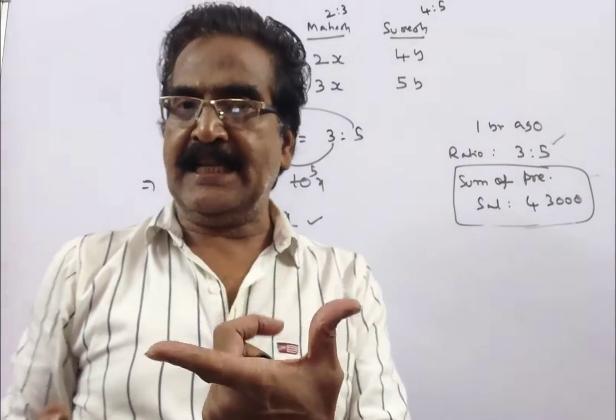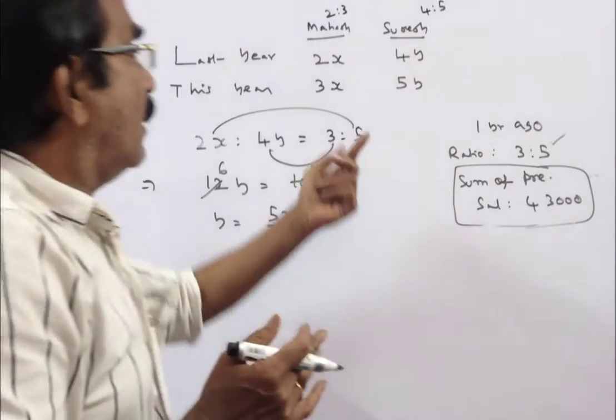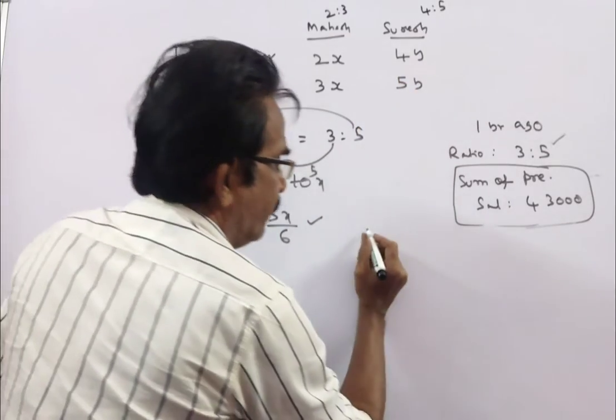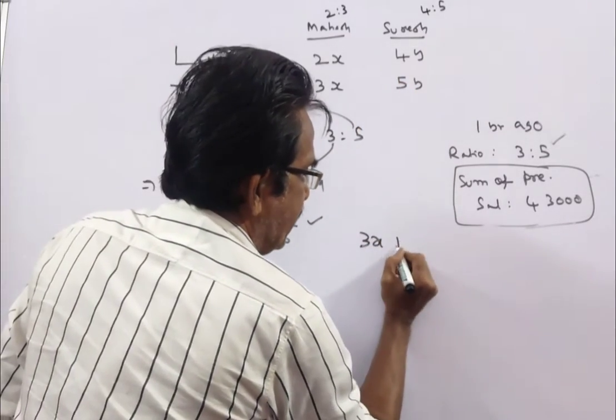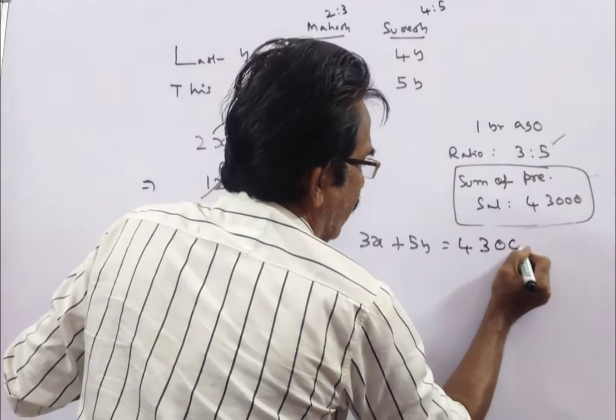Now we have another equation. The sum of their present salaries is 43,000. The present salaries are Mahesh 3x and Suresh 5y. So 3x plus 5y equals 43,000.